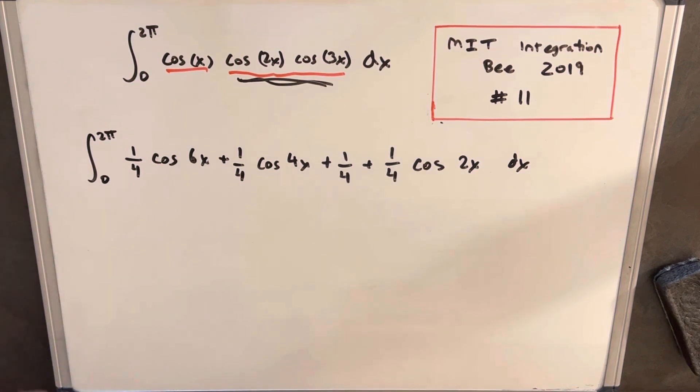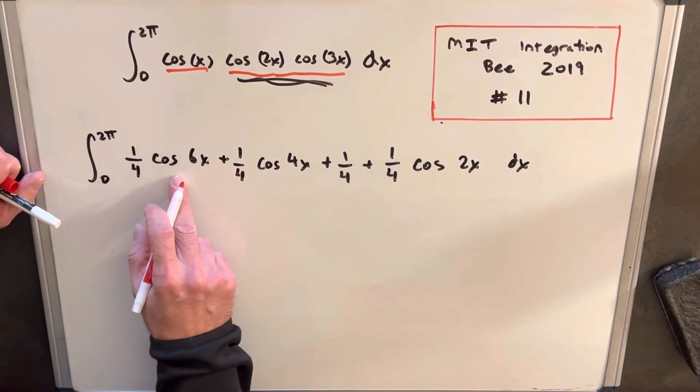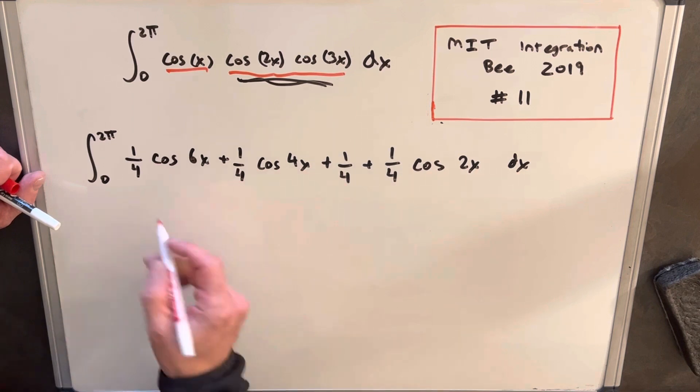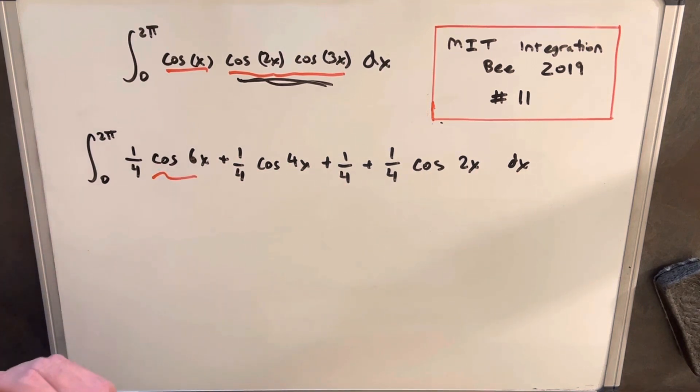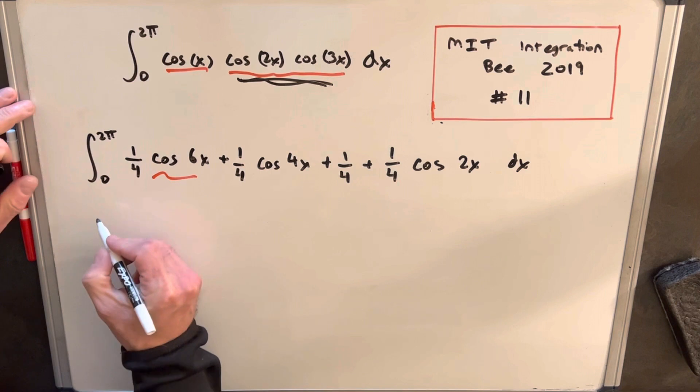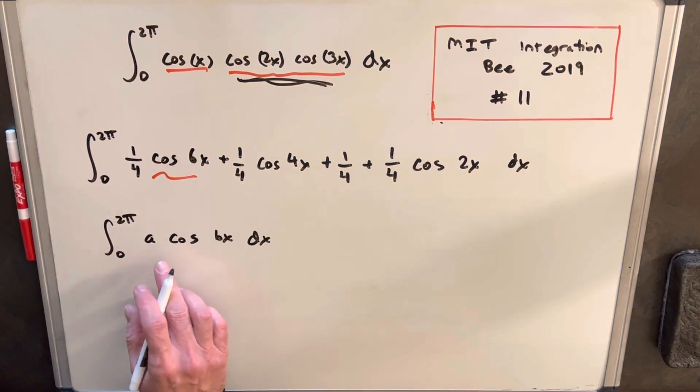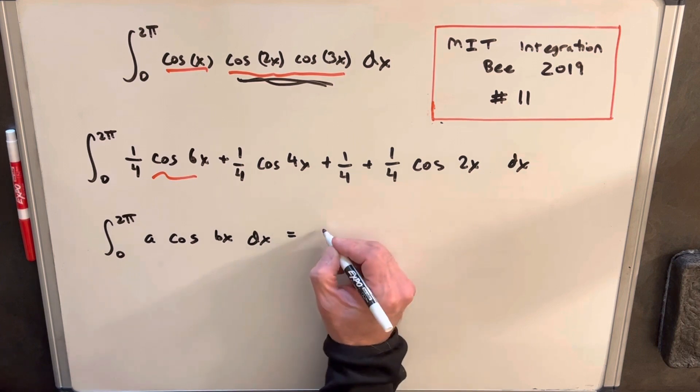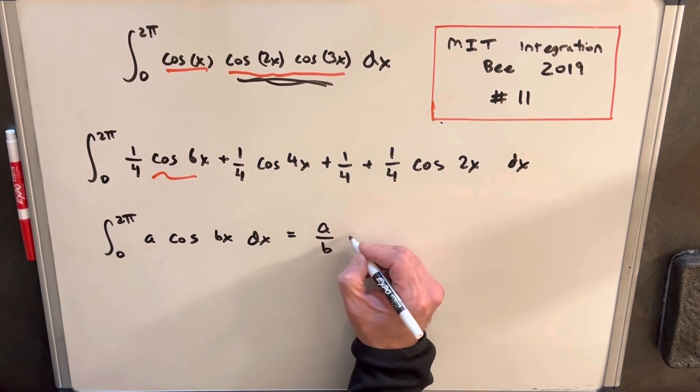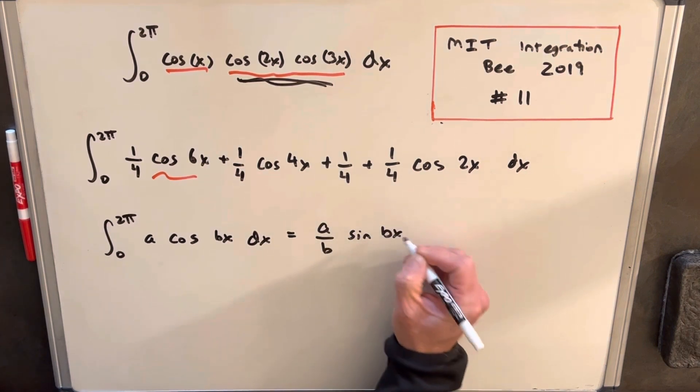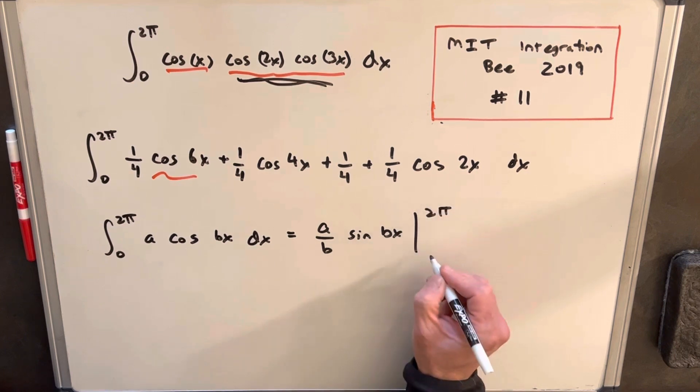So now, before I actually integrate this, what I want to notice is one thing. So let's just, because we have very similar terms here. We have all these different cosine terms with different angles. And let's just look at what happens when we integrate these from 2 pi to 0. So let's just integrate one. Let's not worry about the coefficient or the angle. And when we integrate this, we're going to end up with a over b sine bx from 2 pi to 0.